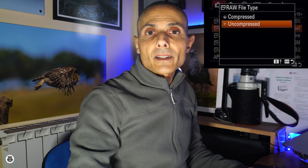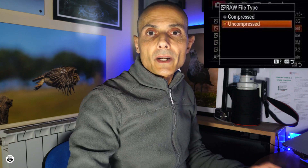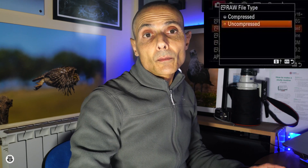The Sony A9 can store images in three different ways: RAW, RAW plus JPEG, and JPEG. Leaving the last two options aside, in the RAW option you can set between compressed and uncompressed RAW files.